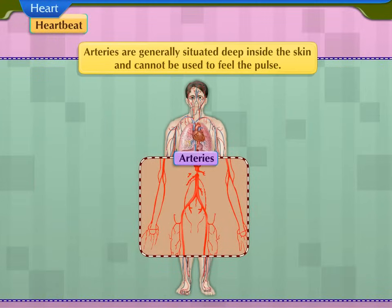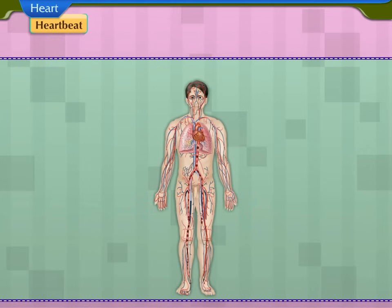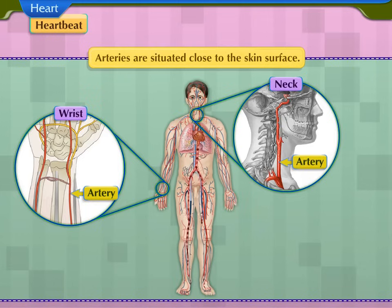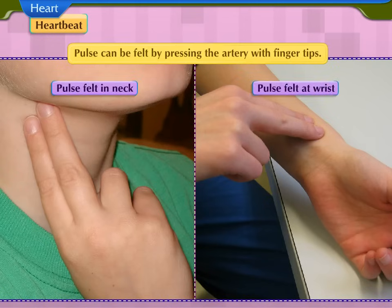Arteries are generally situated deep inside the skin and hence cannot be used to feel the pulse. However, at some places in our body, such as the wrist and the neck, arteries are situated close to the skin surface. Therefore, we can feel the pulse at these places by pressing the artery lightly with our fingertips.